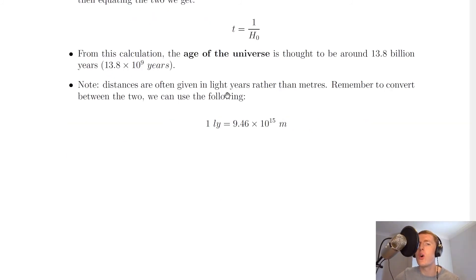Note that distances are often given in light years rather than meters. Remember to convert between the two, we can use the following: one light year is equal to 9.46 × 10¹⁵ meters.